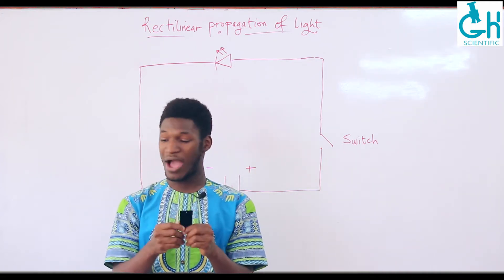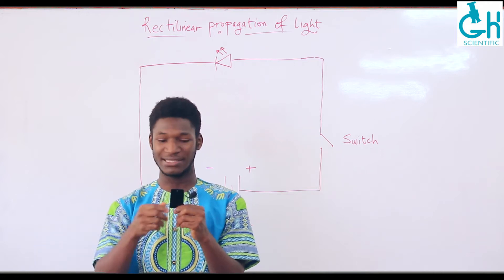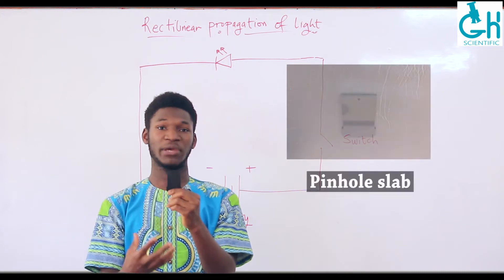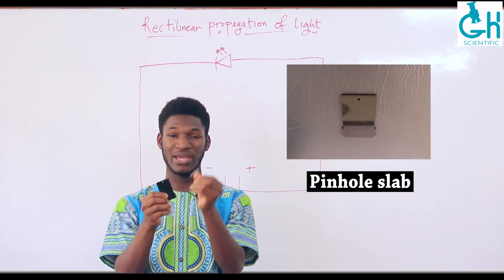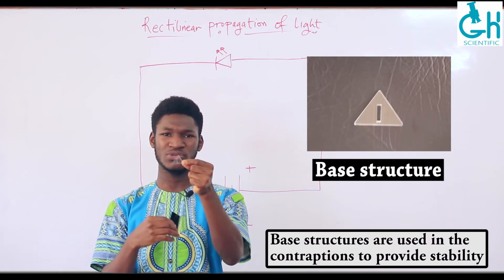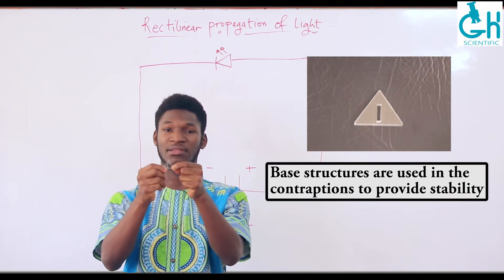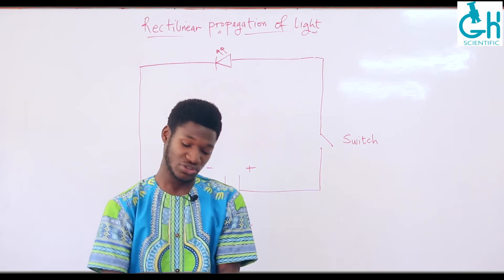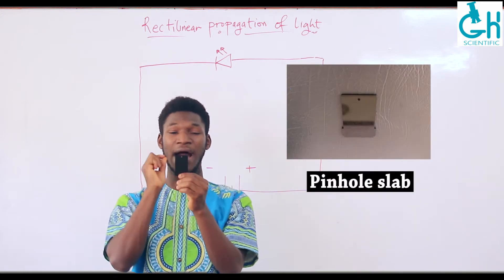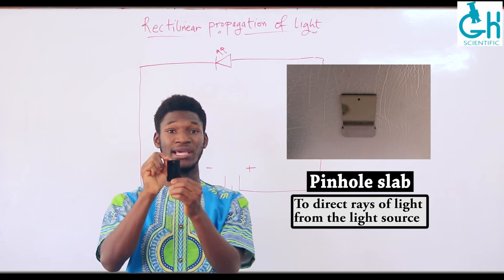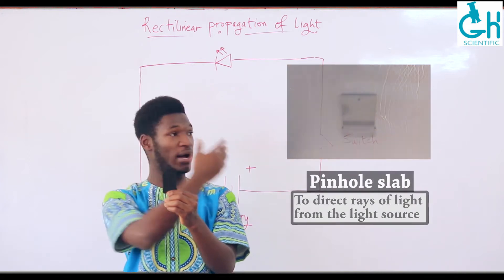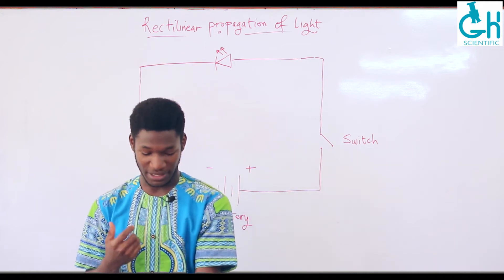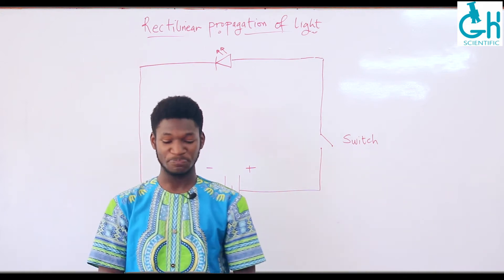We also have these dark slabs — you have single slits, multiple slits, and one of these as well. This is what we call the pinhole contraption. Together with these stabilizing pieces, the dark slabs will be used to direct the rays of light so that we can effectively explore the principle we'll be demonstrating today.